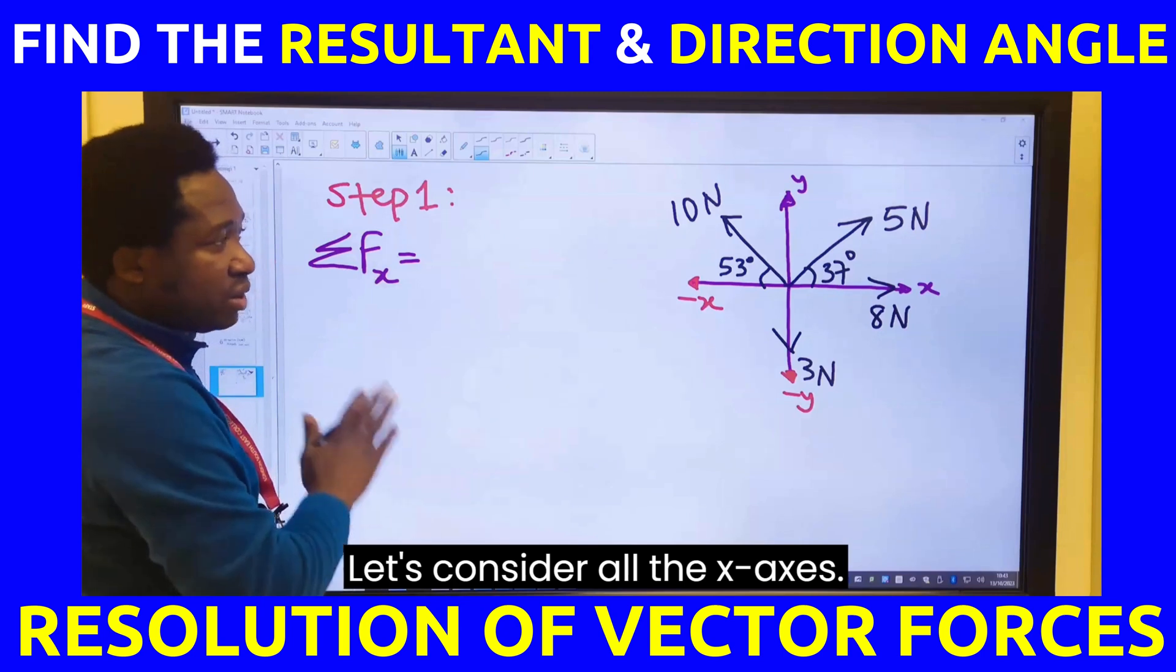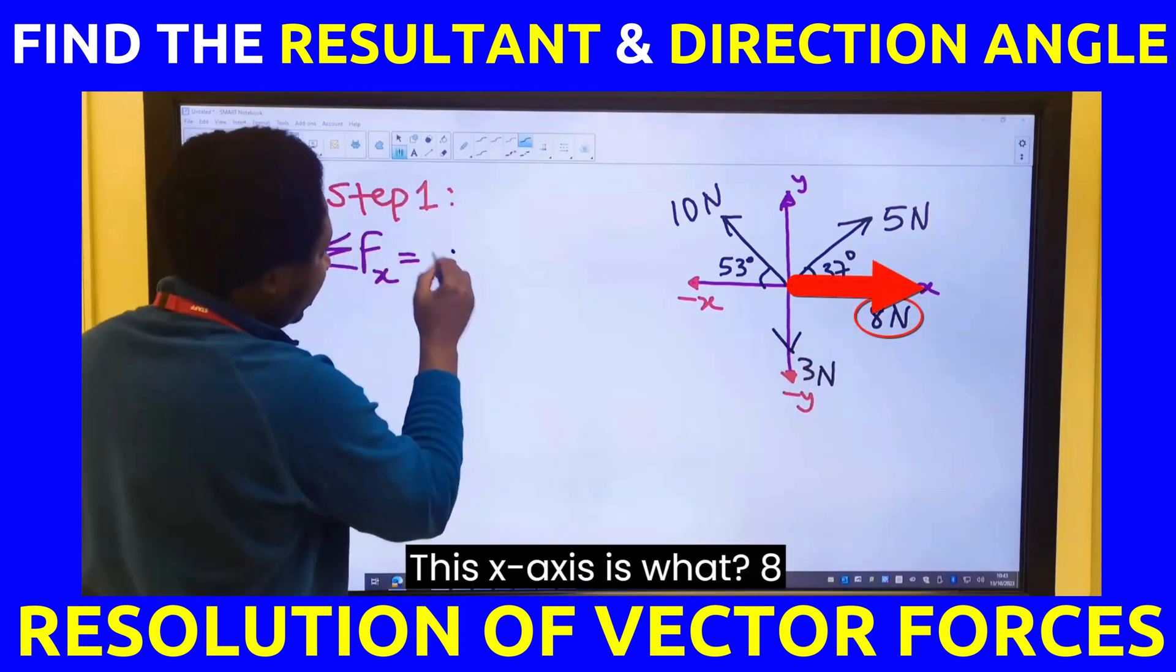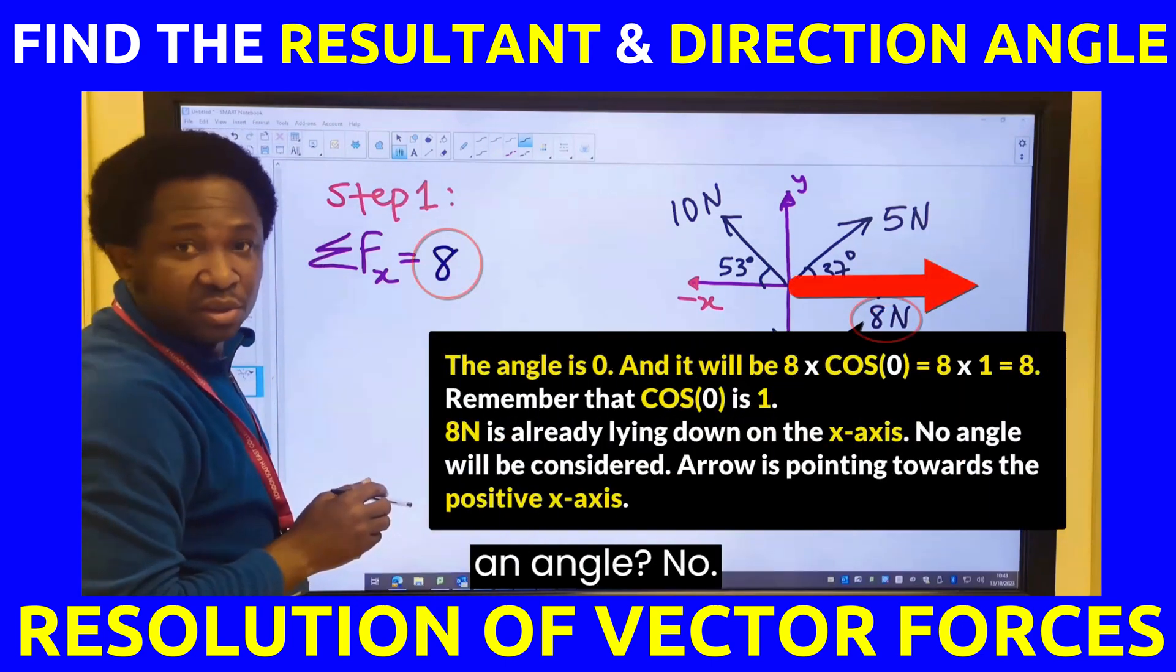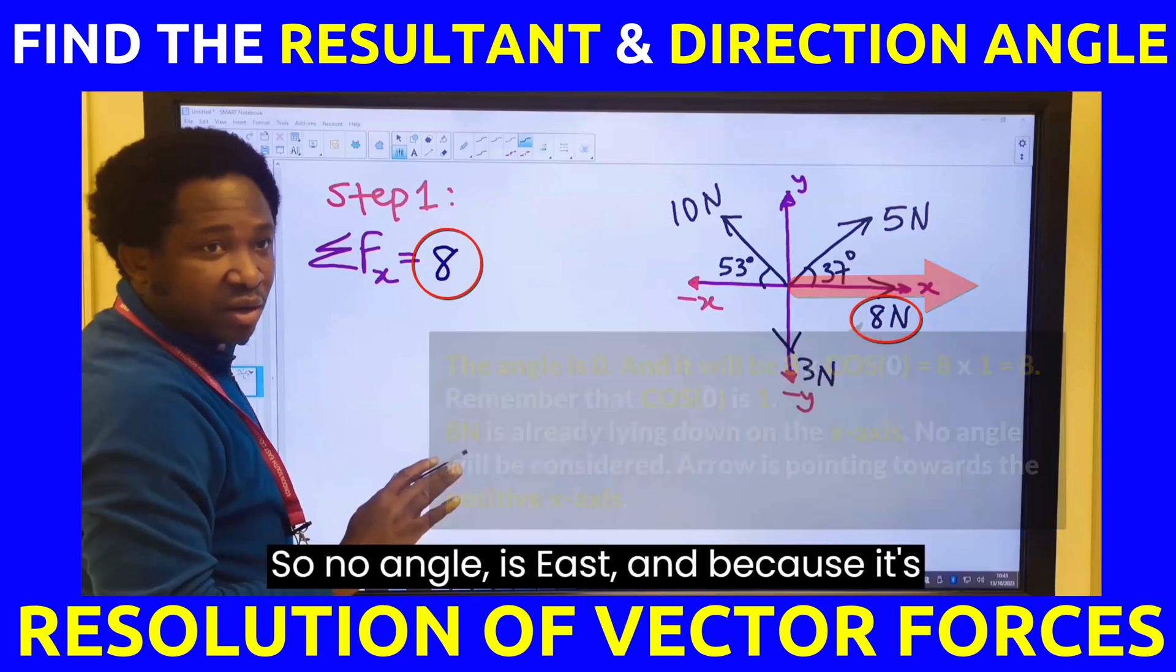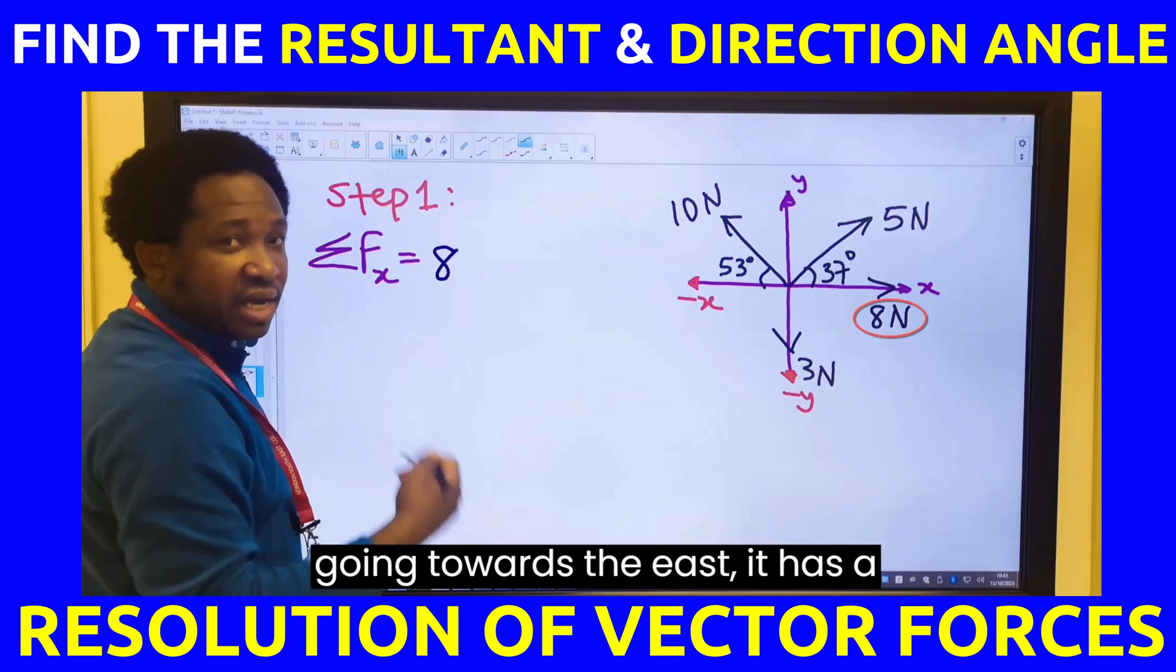Let's consider all the x-axis. This x-axis is what? 8 newtons, east. Does it have an angle? No. So, no angle. It's east. And because it's going towards the east, it has a direction.